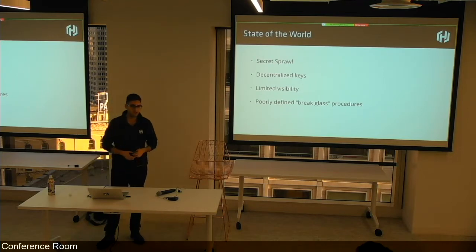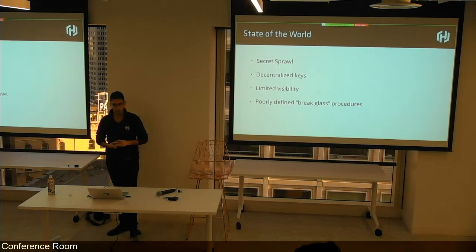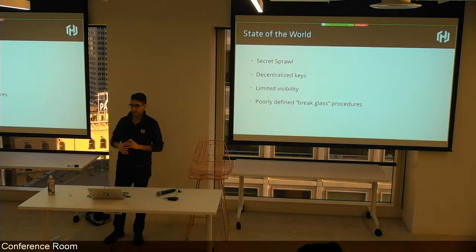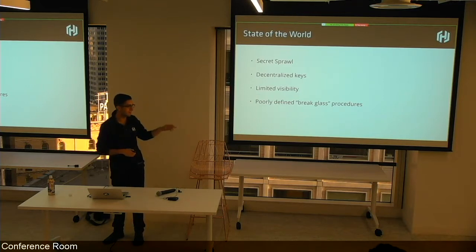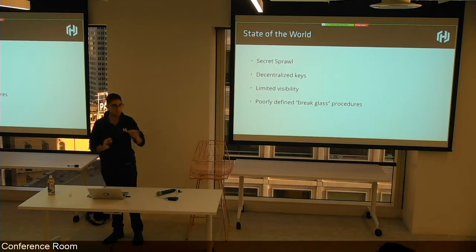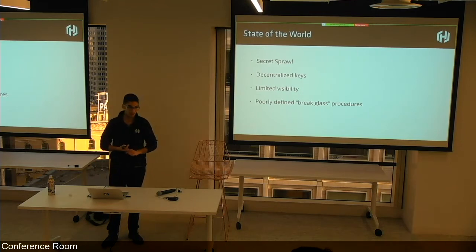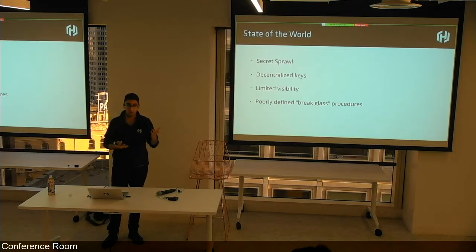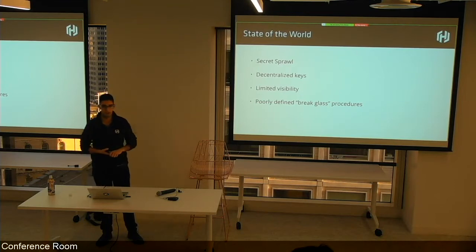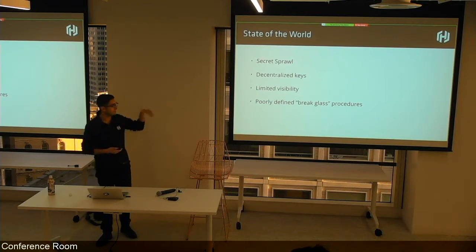The state of the world we generally see — and we can all admit to it — is secret sprawl. Secrets are defined everywhere: they live in GitHub, in Puppet, in wikis, in Dropbox, on sticky notes. It's distributed everywhere. The challenge with that is it's very hard to understand your surface area, very hard to manage all this content, limited visibility — who double-clicked the file in Dropbox? — and a very poorly defined break-glass procedure. If we believe something is compromised, the answer is very complicated.